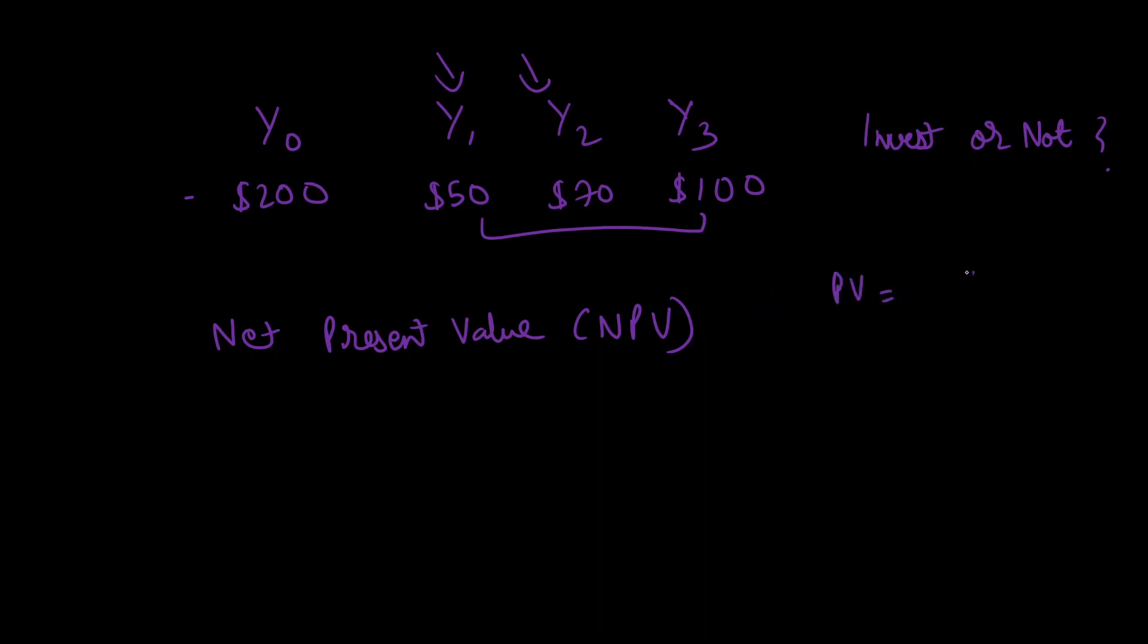divided by (1 + r) raised to the power t. Just to recap: Ct stands for cash flow in period t, r is the discount rate, and t is the number of periods you need to discount it by. Let's assume the discount rate to be 10%, that is r = 10%.